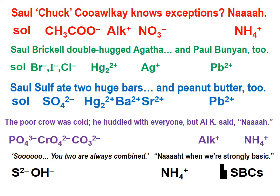In a previous lesson, we went through the five solubility mnemonics that will make our lives a lot easier in solution chemistry. And here they are. The first mnemonic covers: the acetate ion, the alkali metal ions, the nitrate ion, and the ammonium ion. Any compound that has any of those ions is soluble.